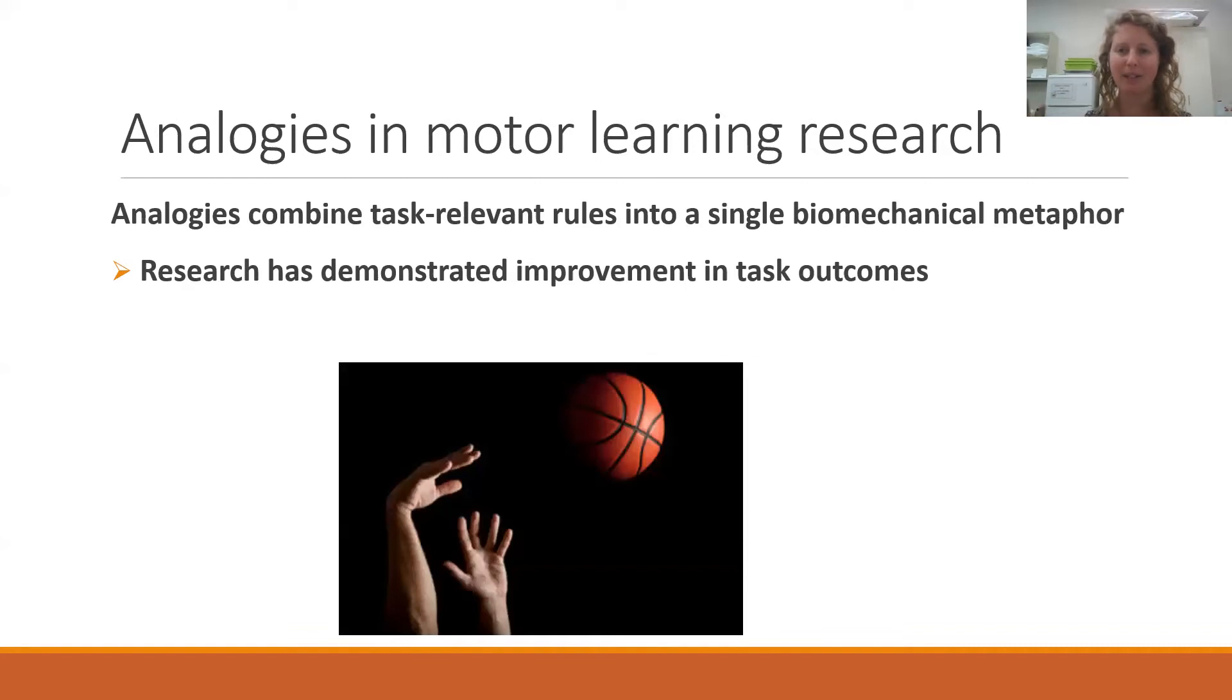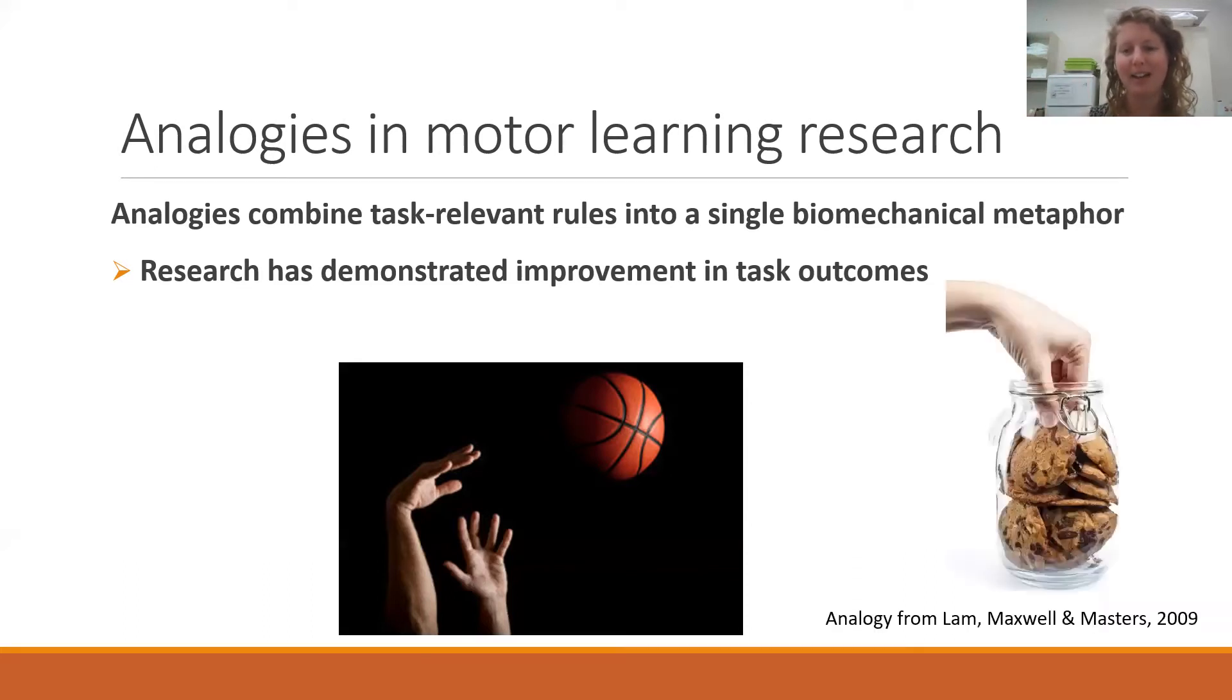So I just want to give a final example from a scientific study where the task in the experiment was throwing a basketball into a hoop. And basically they measured how many times participants were able to get the basketball through the hoop. And the analogies they used, this is a study from 2009, they told participants to imagine that they are reaching with their hands into a cookie jar on the top shelf. This was the analogy given. And the idea is that this motion of reaching into a cookie jar is what will help them to throw the basketball more accurately. And indeed it did.